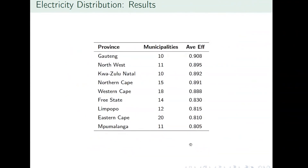The efficiency results for electricity distribution are far better than for water services. Gauteng is the most efficient province at 91% average efficiency, while Mpumalanga is the least efficient but still at 80% average. This indicates small improvements can be made, but this data is from 2005, and much has changed in South Africa's electricity landscape since — with large price increases and multiple rounds of load-shedding — so newer data is needed for current estimates.